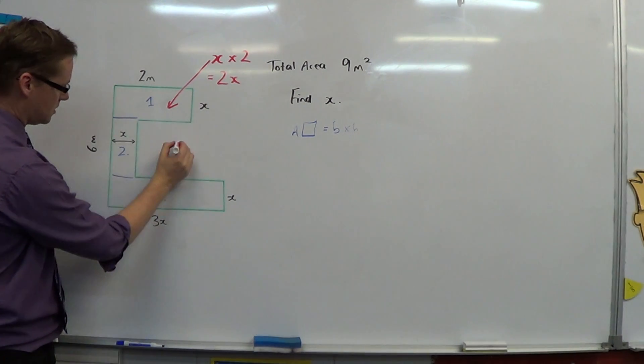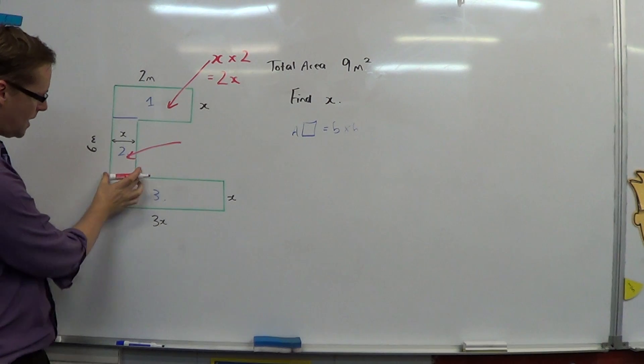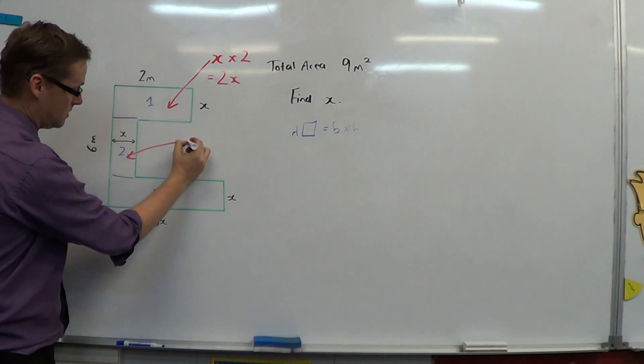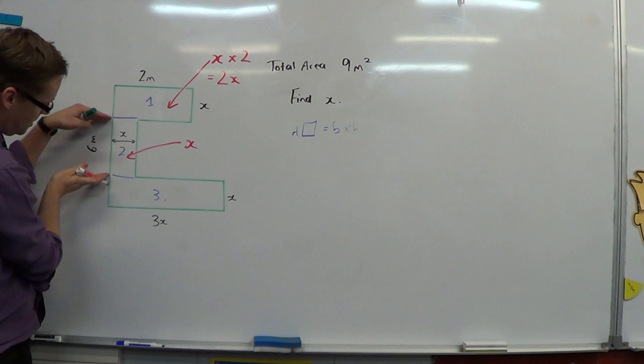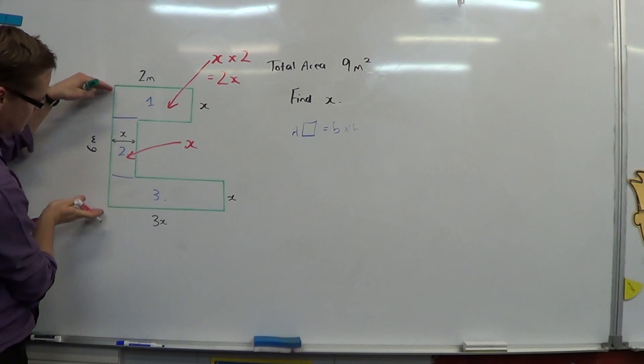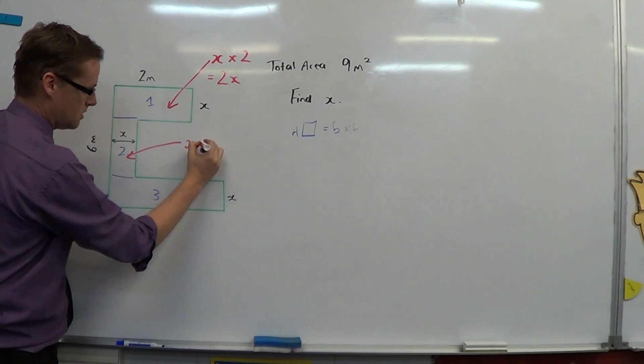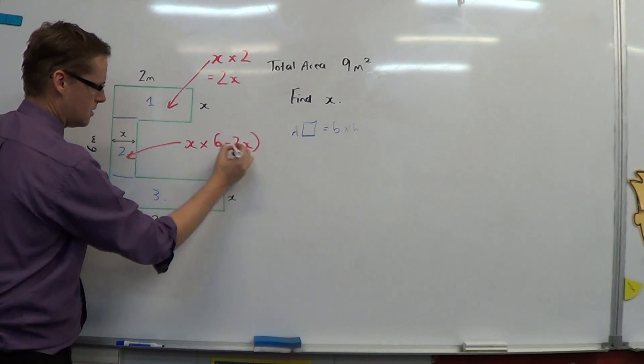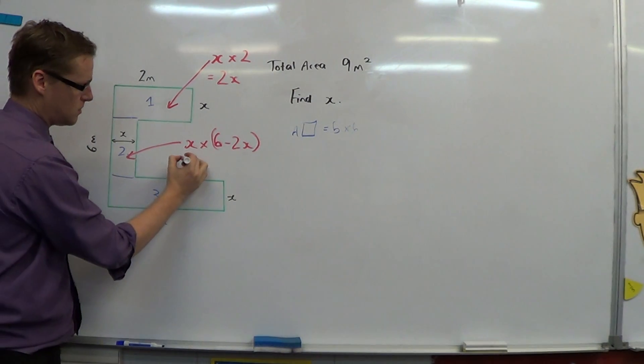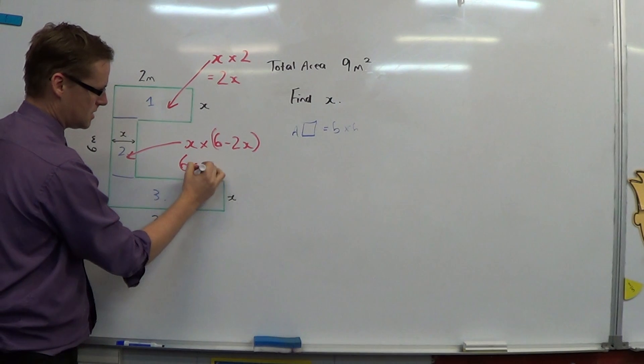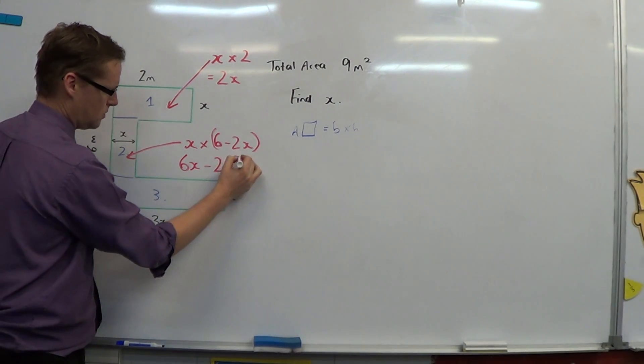When I think of this rectangle here, the base is x and its height is 6, take off 2x's. It's a little bit complicated, this one. We get 6x take away 2x squared.